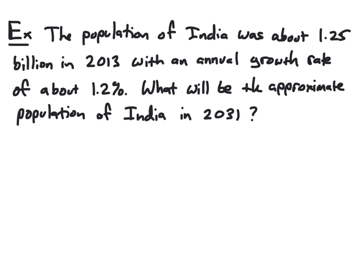We begin by considering this example, which involves finding an exponential function that models a given situation. We're told that the population of India was around 1.25 billion in 2013 and has an annual growth rate of about 1.2%. We want to know the approximate population of India in 2031. To answer this, we need to find a function of the form f(x) = a·b^x which models our situation, then evaluate it at the appropriate value of x to give us the population in 2031.